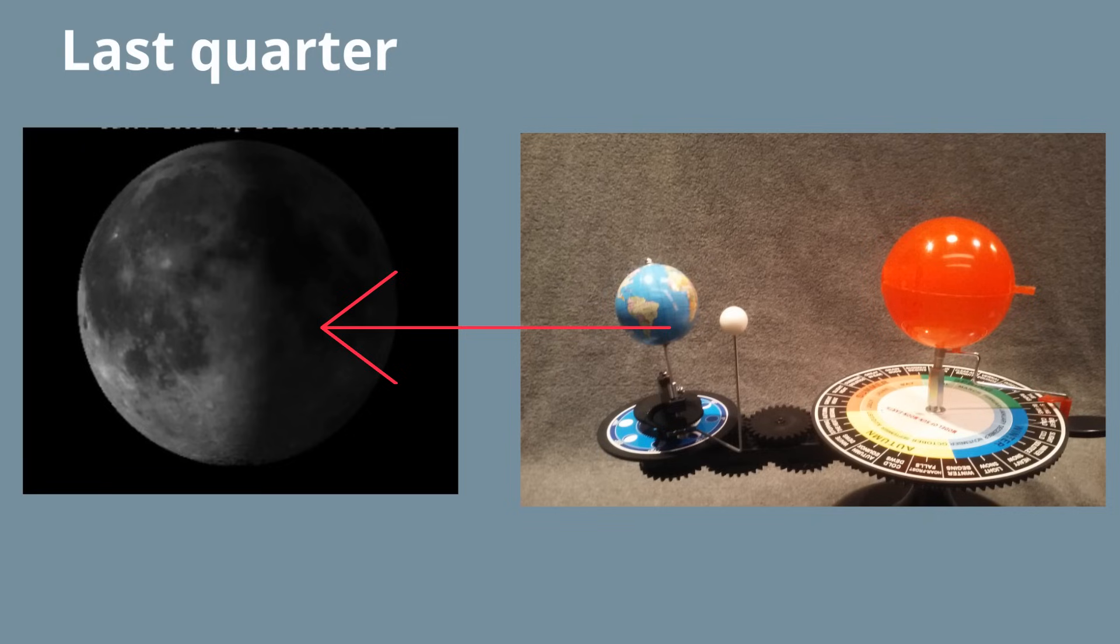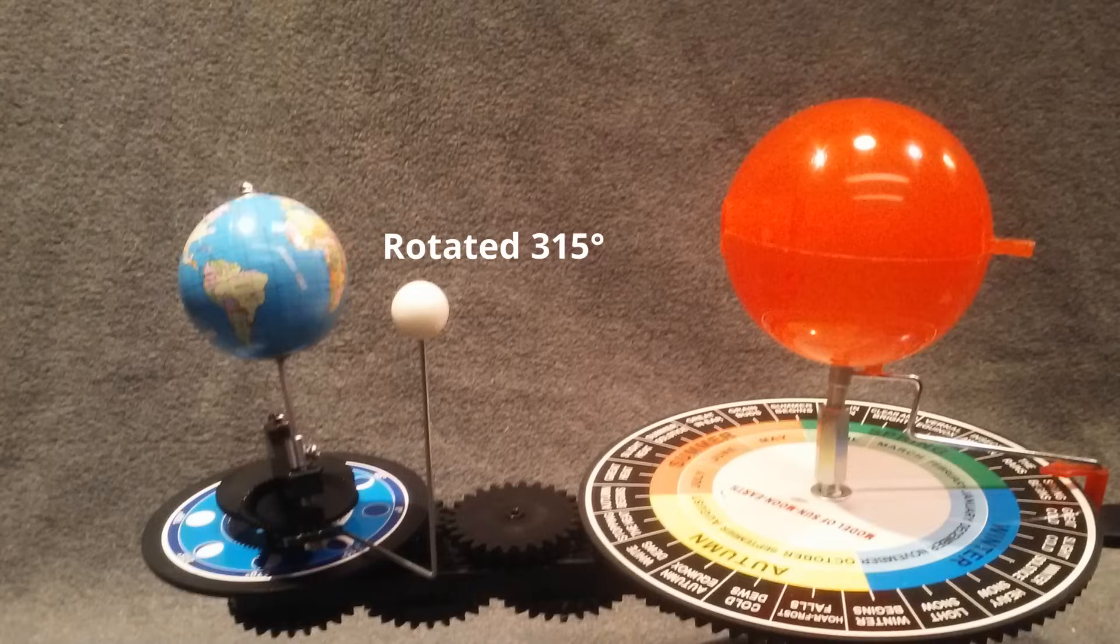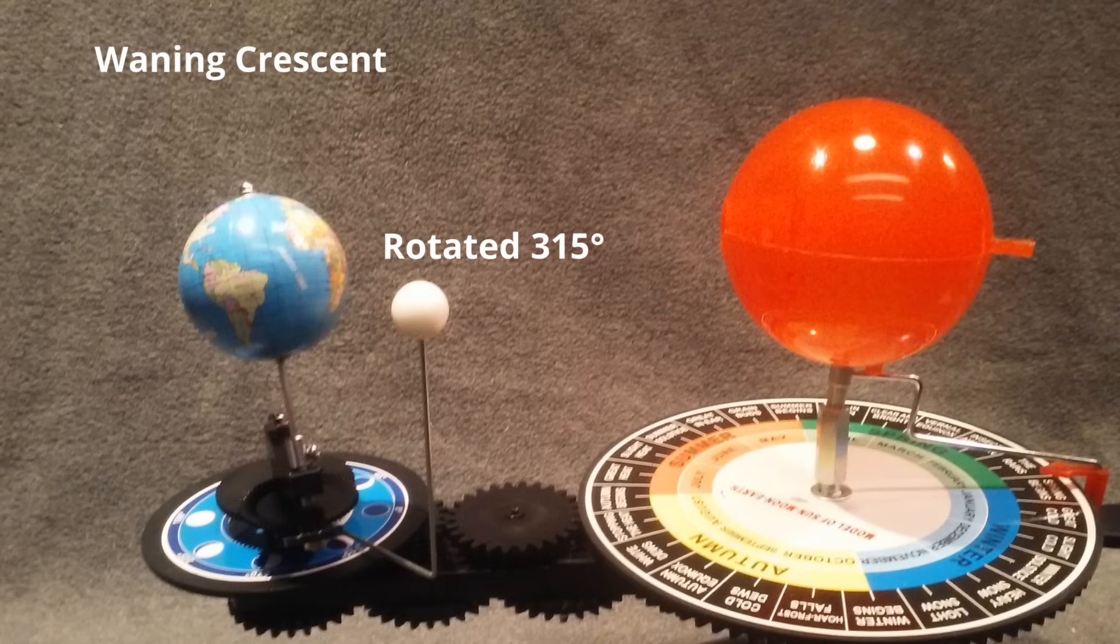After roughly 24 days, the moon is now at waning crescent. Remember, waning means the light is getting smaller. And the sun, earth, and moon alignment looks like this.